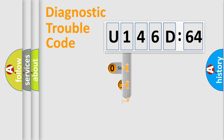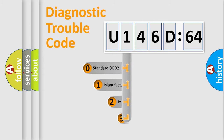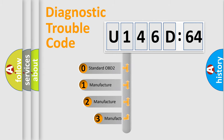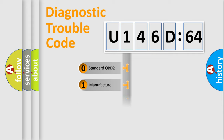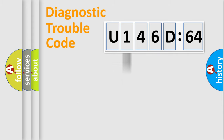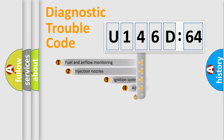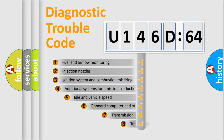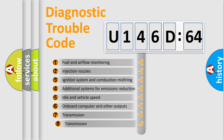This distribution is defined in the first character of the code. If the second character is expressed as zero, it is a standardized error. In the case of numbers 1, 2, or 3, it is a more specific expression of a car-specific error.